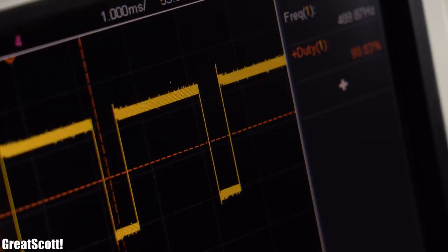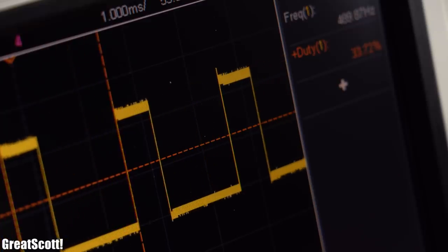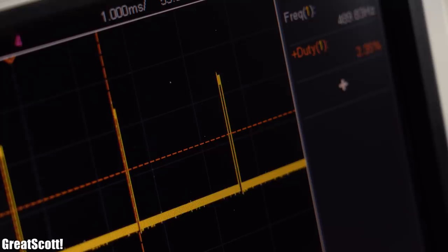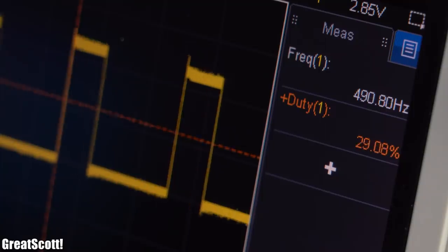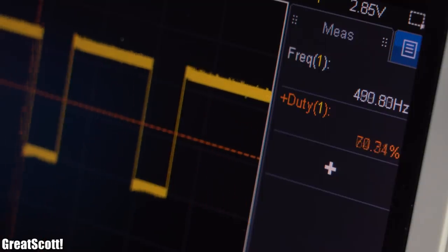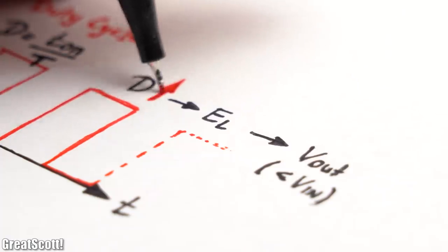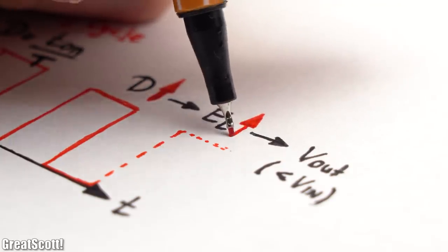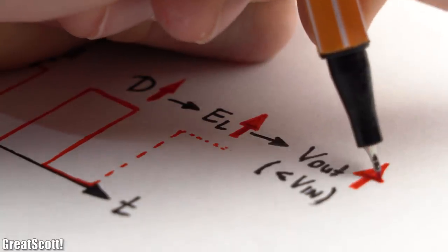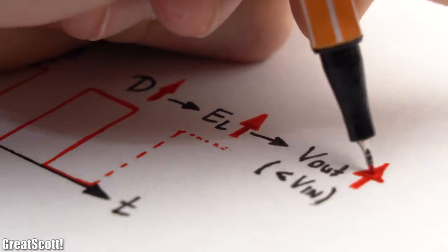And the altering of the duty cycle depending on the output current is called pulse width modulation, which can reach a maximum of 1, so 100%. The higher this value becomes the more energy is being stored in the coil, and also the output voltage gets closer to the input voltage.